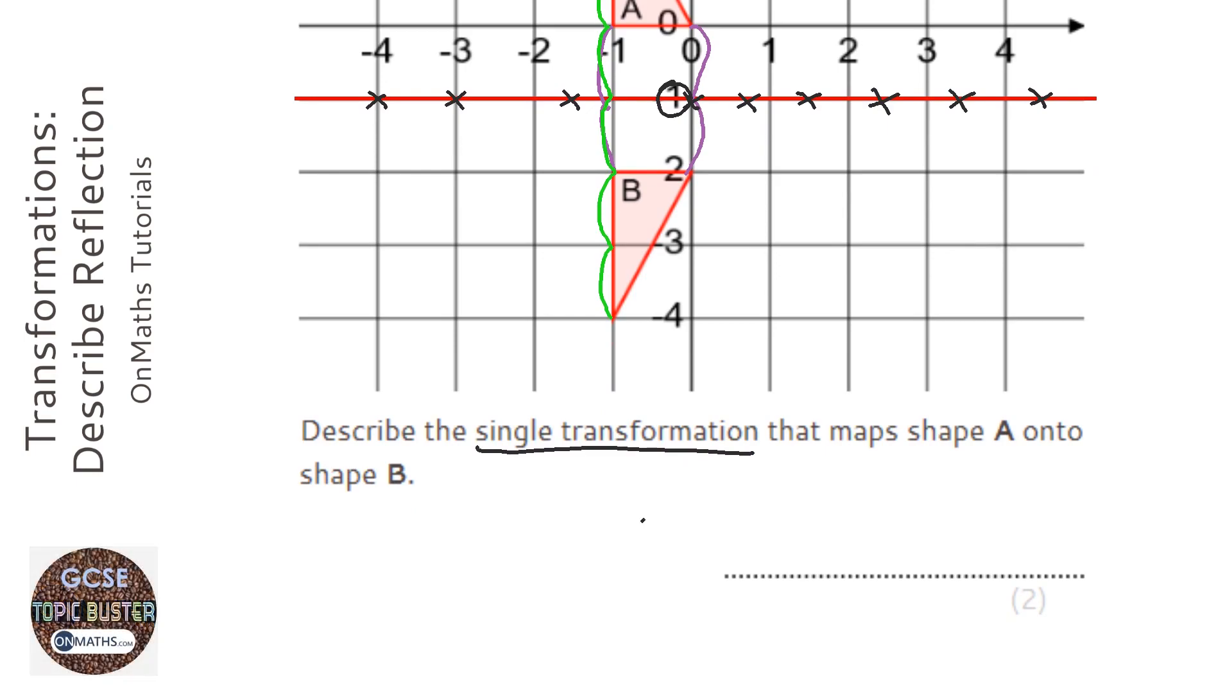So I need to say that it is a reflection across, and then I'm going to say y equals minus one. So you need to have the equation of the mirror line to get the full marks.